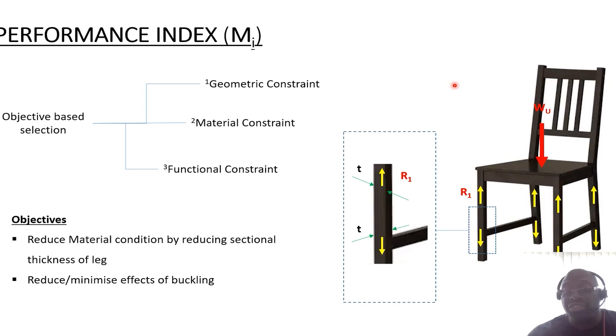We need to look at the material that gives the ideal balance in terms of ideal resilience to buckling, ideal sectional thickness so you're not increasing the unladen weight of the chair, and how light the material also needs to be. When it comes to this particular activity, we're going to look at using CES. CES uses an objectives-based model where the material constraint tends to be the focus. The constraint-based model focuses on the functional constraints and the geometric constraint, but when it comes to objectives-based modeling, the geometric and functional constraints are fixed, so your variability will be via the material. These are the objectives: to reduce the material consumption by reducing the sectional thickness of the leg and to minimize and reduce the effects of buckling by increasing the material's resilience to compressive loading.